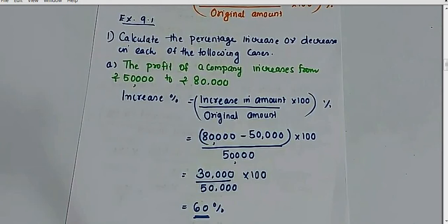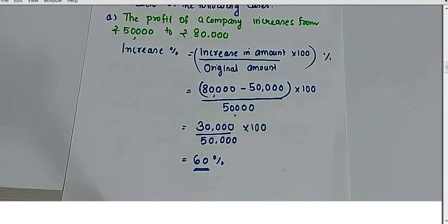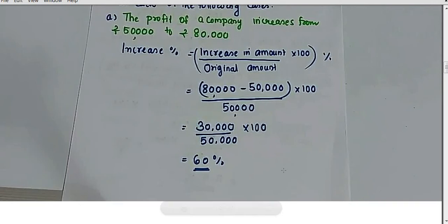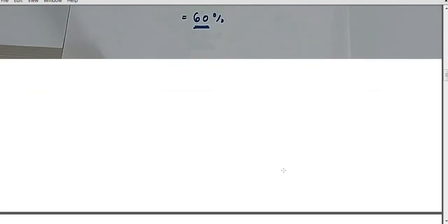The new amount was 80,000 and the original amount was 50,000, so increase in amount is 80,000 minus 50,000 = 30,000. Original amount is 50,000. So: 30,000 upon 50,000 multiplied by 100 = 60%. The book's answer is completely wrong — do not use it. Our correct answer is 60%.